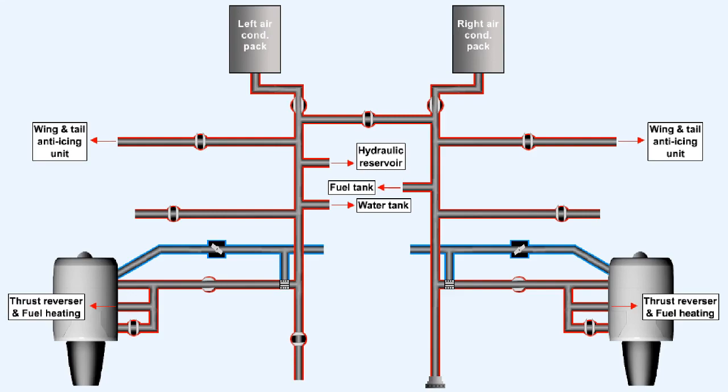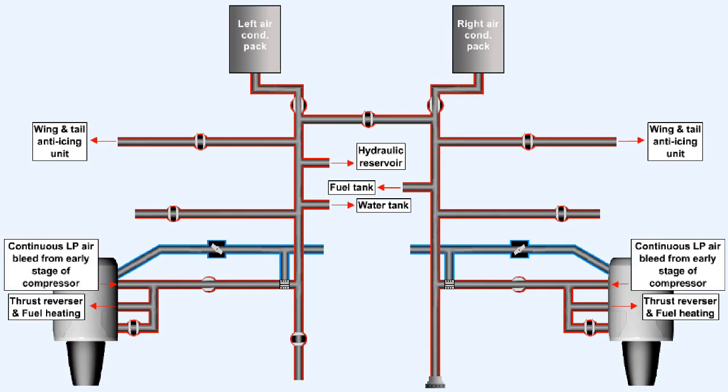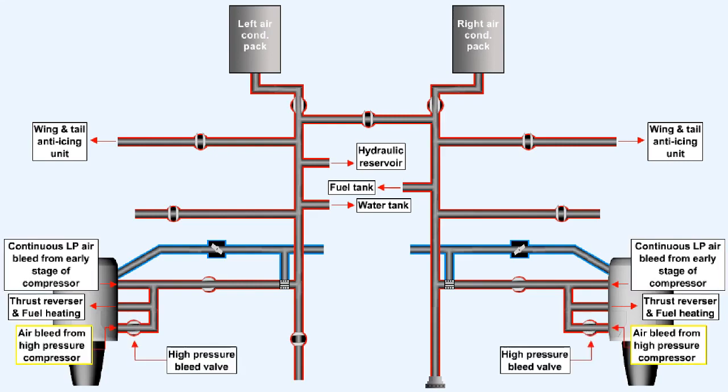For use outside the engine itself air typically is bled from two sources. We'll use this simplified diagram to show them. The first source is an outlet on an early stage of the compressor which supplies a continual low pressure bleed. This continual low pressure bleed when system demand requires is supplemented by a second source of air taken from the HP compressor through a control component called the high pressure bleed valve.